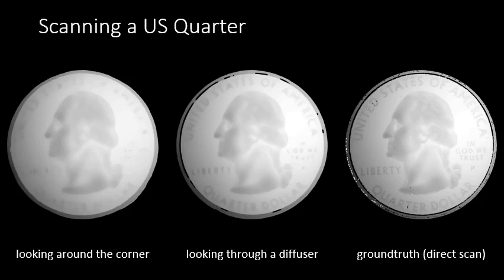We use the same system to additionally take measurements of the coin in the looking through a diffuser setting. Here are reconstructions compared against a scan obtained with the same coin directly in the line of sight of our optical coherence tomography system. We observe that in both cases, our algorithm can reconstruct very fine detail on the coin, enough to distinguish its denomination.